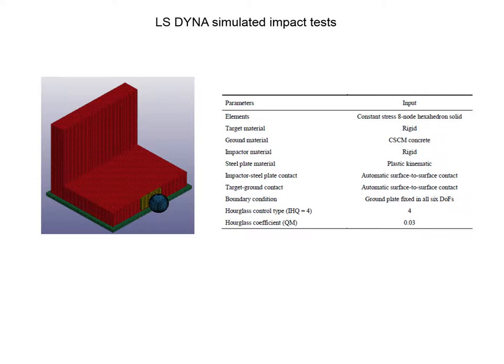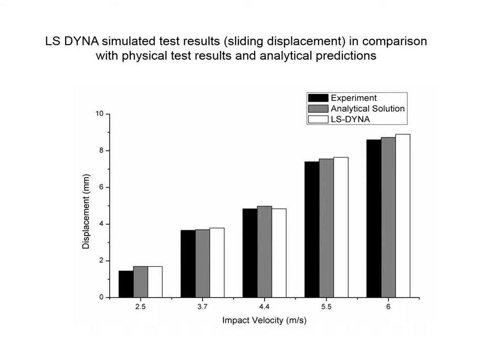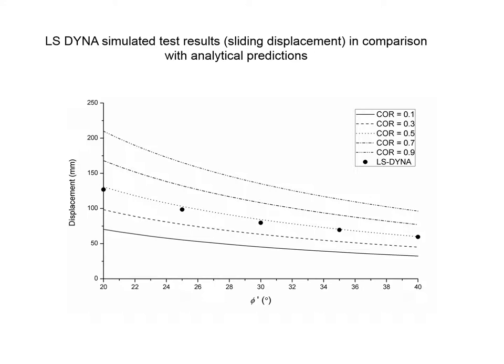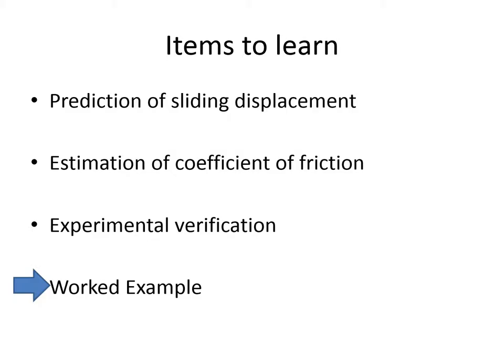The calculation method presented has also been compared with numerical simulation using program LS-DYNA. This bar chart shows that the amount of sliding displacement predicted by the analytical solutions is consistently in good agreement with experimental measurement and results from LS-DYNA simulation. The chart shows that sliding displacement is only moderately sensitive to changes in φ'. In contrast, the result is much more sensitive to changes in the coefficient of restitution, which depends on the type of impactor and the surface of the target.